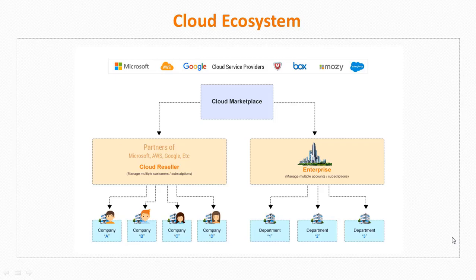In a cloud ecosystem that comprises cloud service providers like Amazon, Microsoft, and Salesforce on one side, and small and medium businesses or enterprise customers on the other side, managed service providers or MSPs and cloud partners or resellers are emerging as key players in delivering various cloud services like SaaS, IaaS, and other services to their enterprise customers.